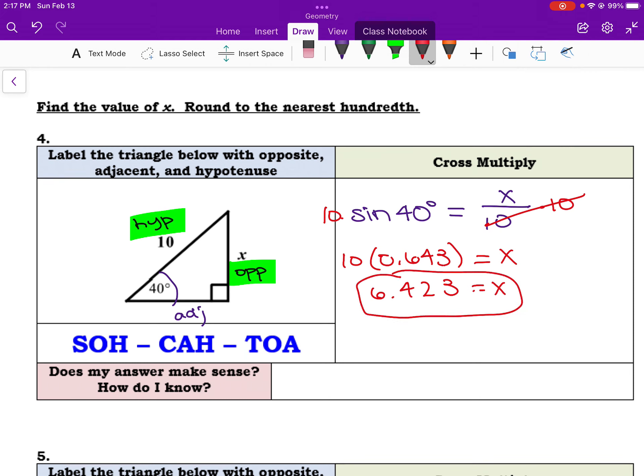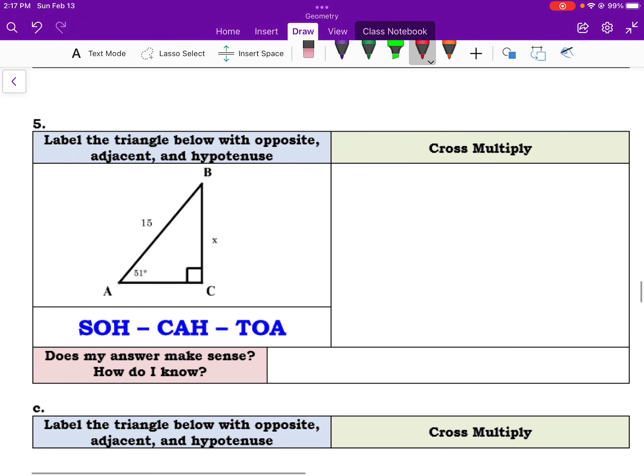And you do always want to see, does it make sense in the context of the diagram? Because this is a leg, we expect it to be shorter than the hypotenuse, which is 10. So yes, this does make sense because it is shorter than the hypotenuse.